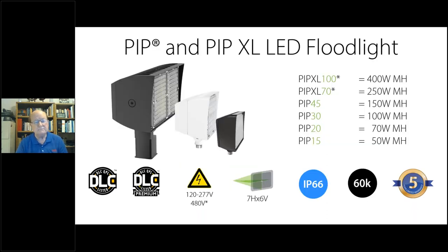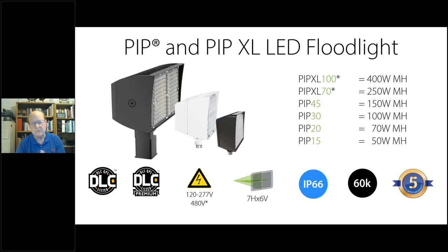The next family is our PIP and PIP XL — XL being the larger version. Two DLC varieties depending on the product. It's rated 120-277V universal voltage and we also offer 480V. Moving from ultra to economy, this one comes in a wide angle seven by six. It's IP66 — high pressure water rated. It has a 60,000 hour life and still has our five-year limited warranty.